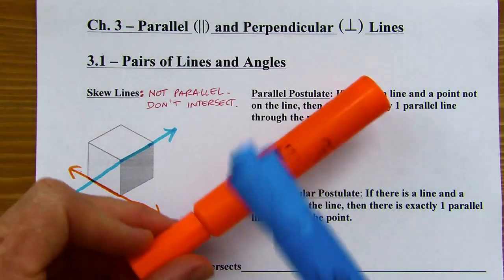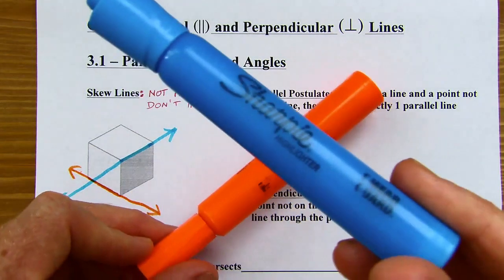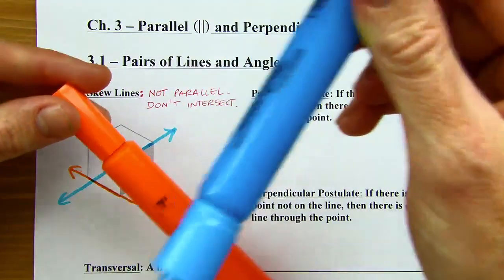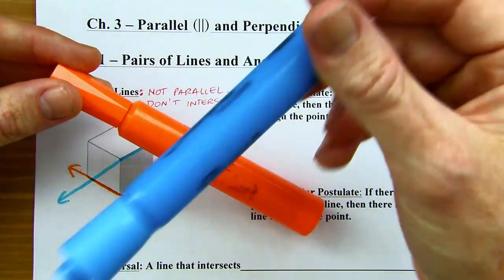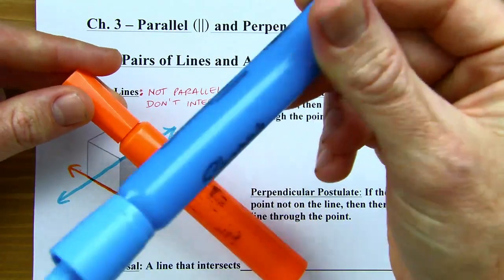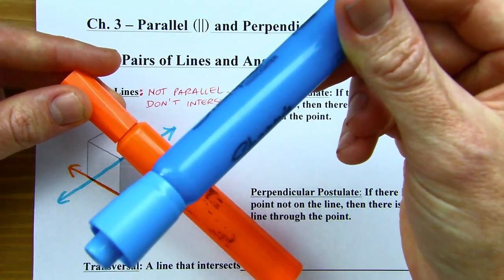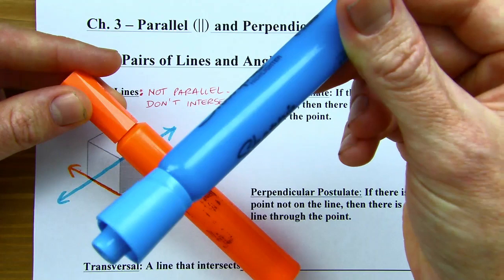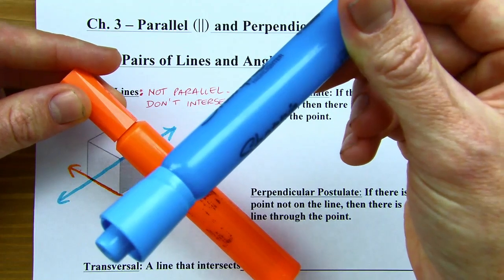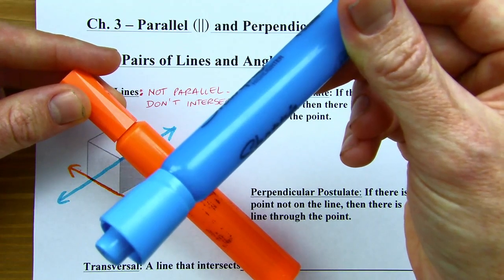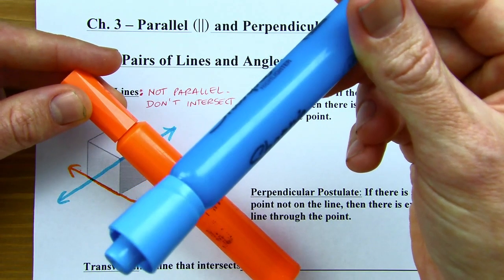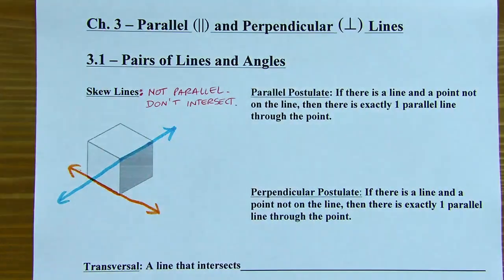Using these two pens as another example — the blue pen is just passing over the orange pen. These are skew lines. They're not parallel, but they also do not intersect. So that's what skew lines are.